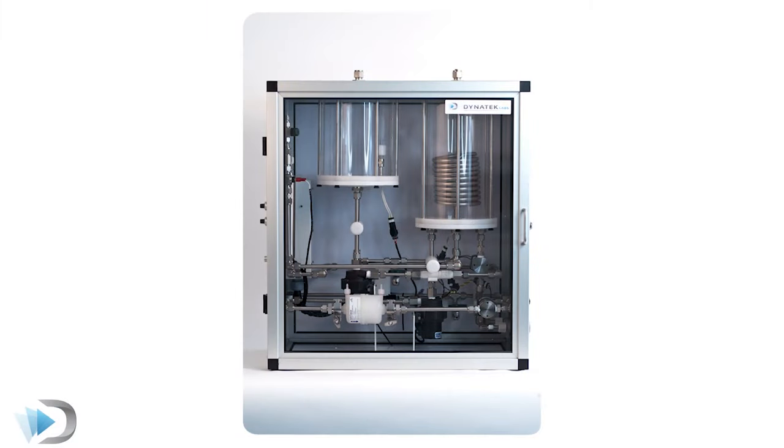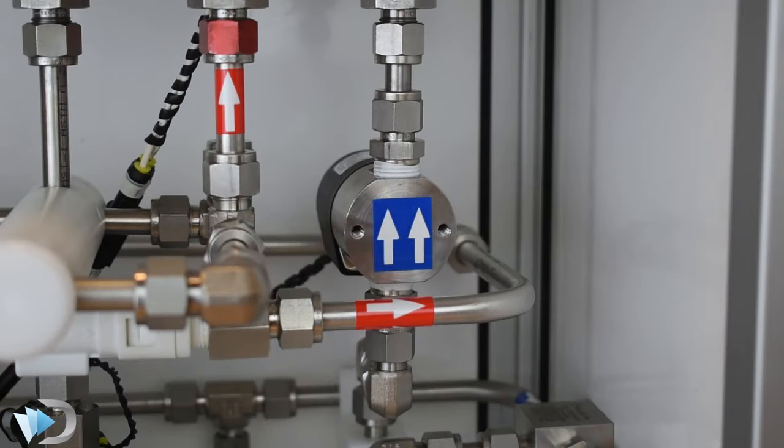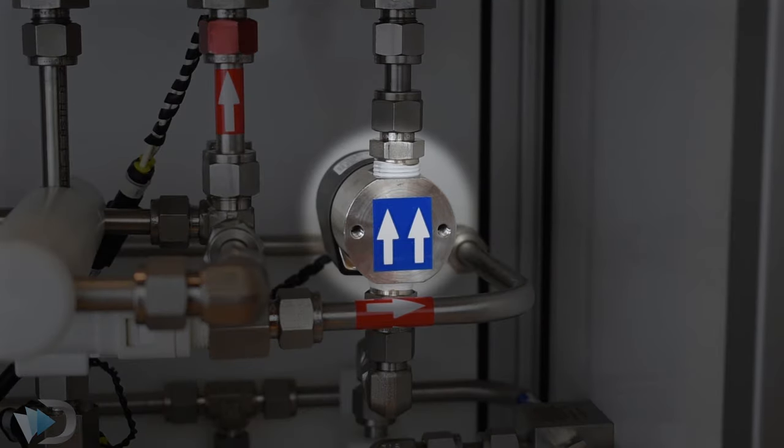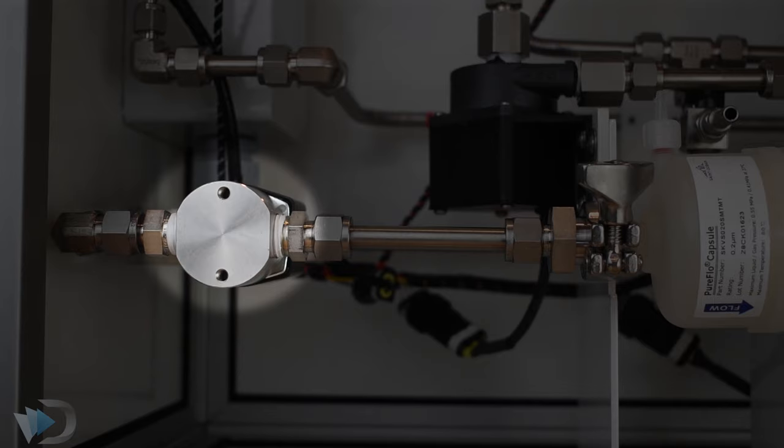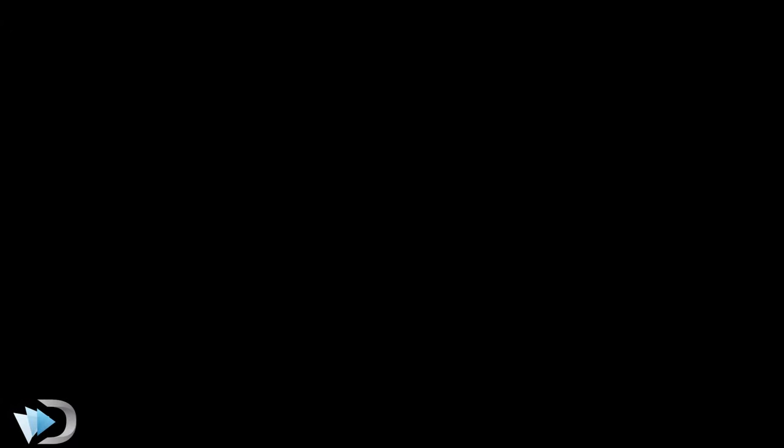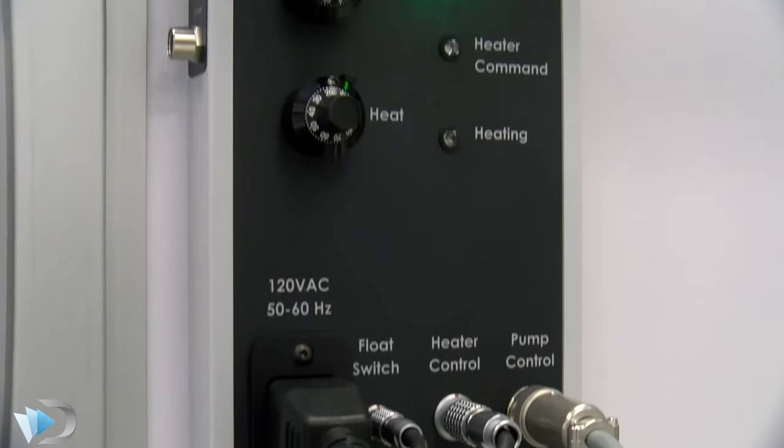Dynatech's fluid management system pairs with the UST to provide clean, heated, and pressurized testing fluid to the testbed. The FMS is designed with multiple fail-safes, including solenoid valves, to maintain pressure in the system in case of unintended power outages. To learn more about Dynatech's FMS, click on the link in the description below.